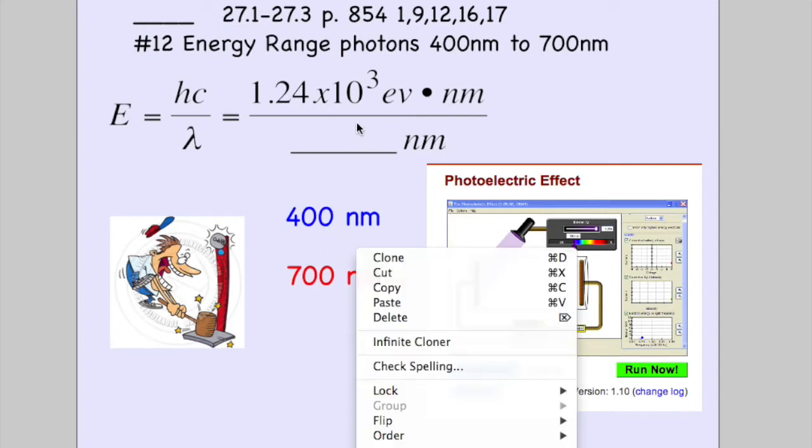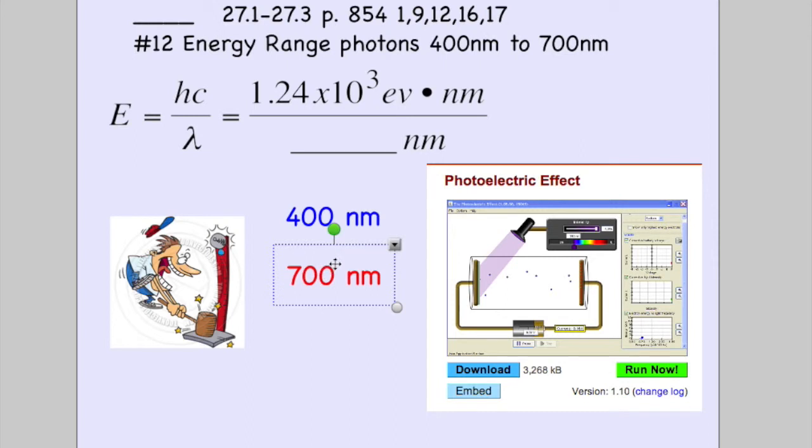So for red light, you're going to divide by red, 700 nanometers. Blue light, put in 400 nanometers. That's all it takes. It gives you a good feel for the EV energy.